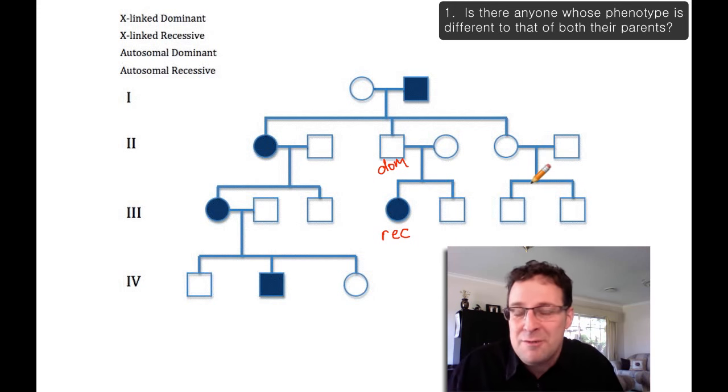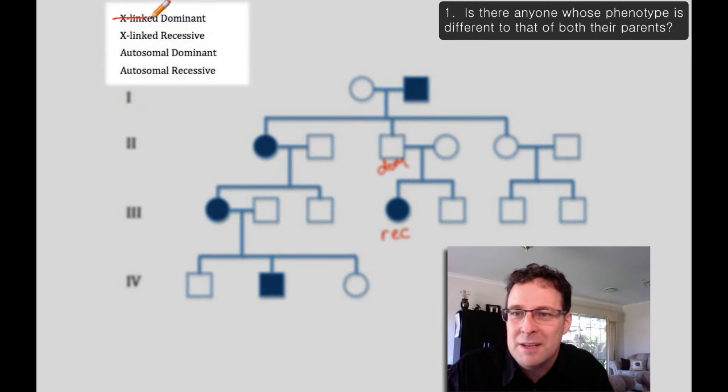Because in this pedigree, or any pedigree for that matter, we're really interested in the individuals that are shaded. They're the ones that have whatever trait it is that we're talking about. We now know that in this pedigree, the shaded individuals have the recessive phenotype. So we can right away eliminate X-linked dominant and autosomal dominant as possibilities.